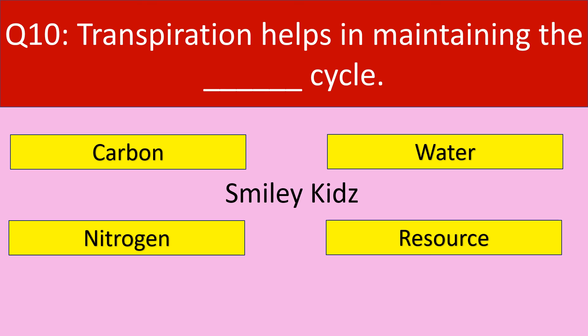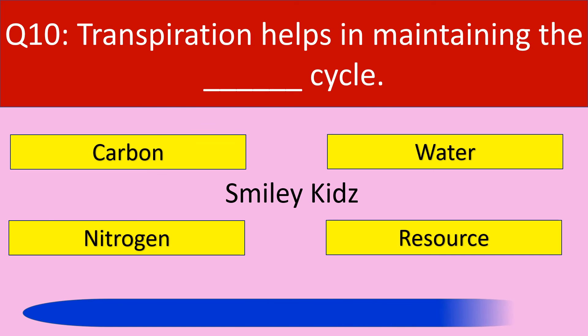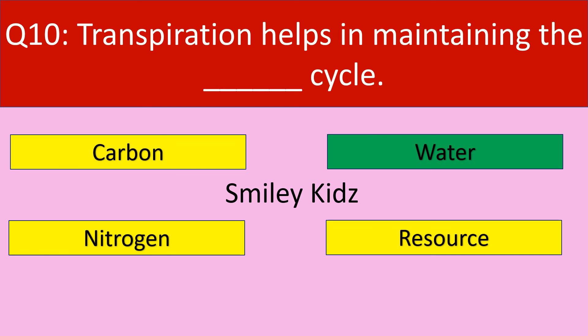The last question. Transpiration helps in maintaining the dash cycle. Your options are carbon, water, nitrogen, or resource. Your time starts now. The correct answer is water. Transpiration helps in maintaining the water cycle.